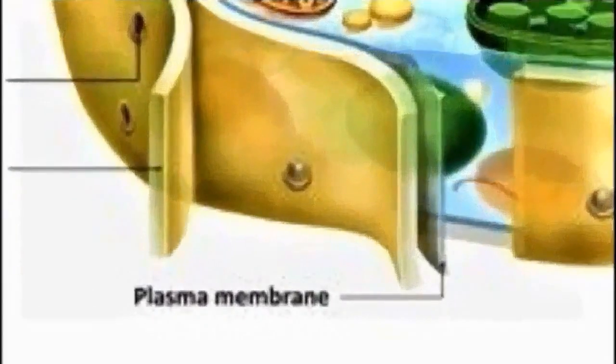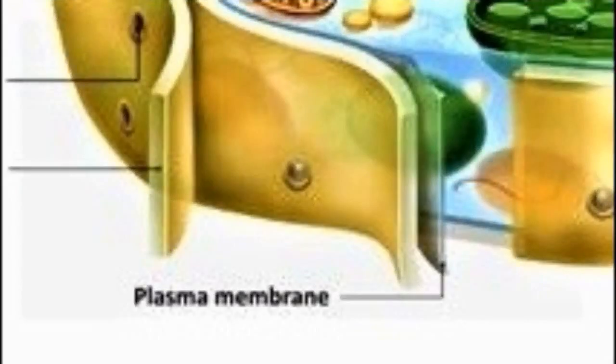Next, we have the cell membrane. It is the semi-permeable membrane that is present in the cell wall. It is composed of a thin layer of protein and fat. The cell membrane plays an important role in regulating the entry and exit of specific substances within the cell.